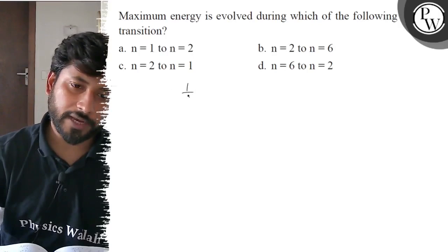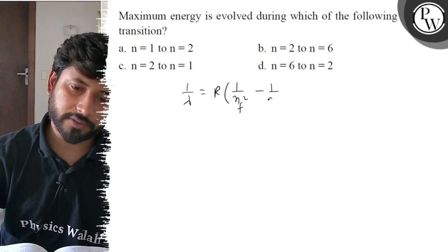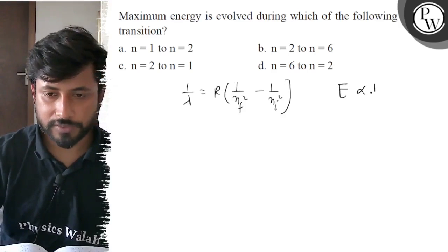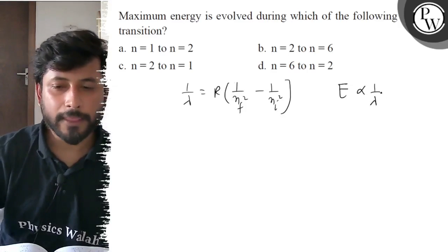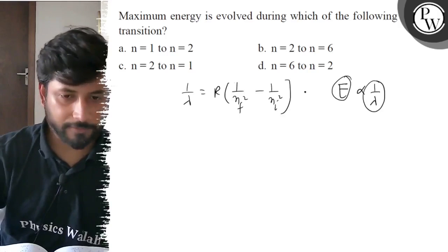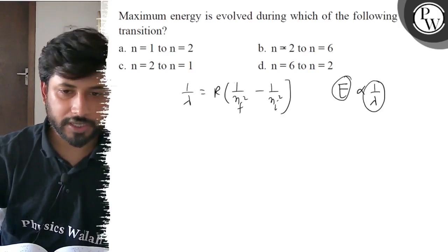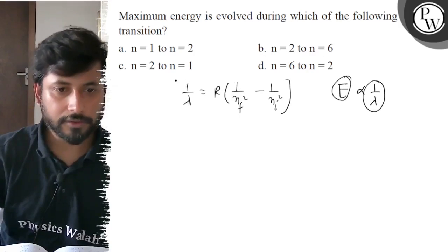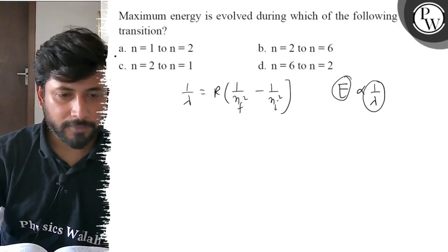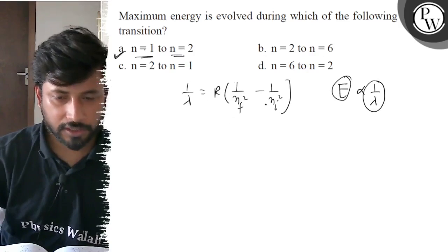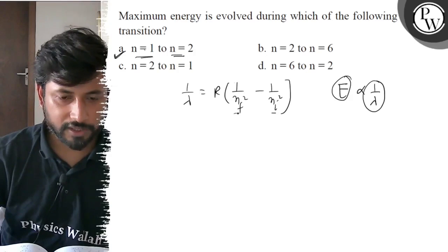The formula is 1/λ = R times (1/n_final² minus 1/n_initial²). Energy is inversely proportional to lambda, and energy is directly proportional to 1/lambda. So the value of 1/lambda is the most important value. Looking at the given options, 1/lambda is greatest when n_initial equals to 1 and n_final equals to 2.